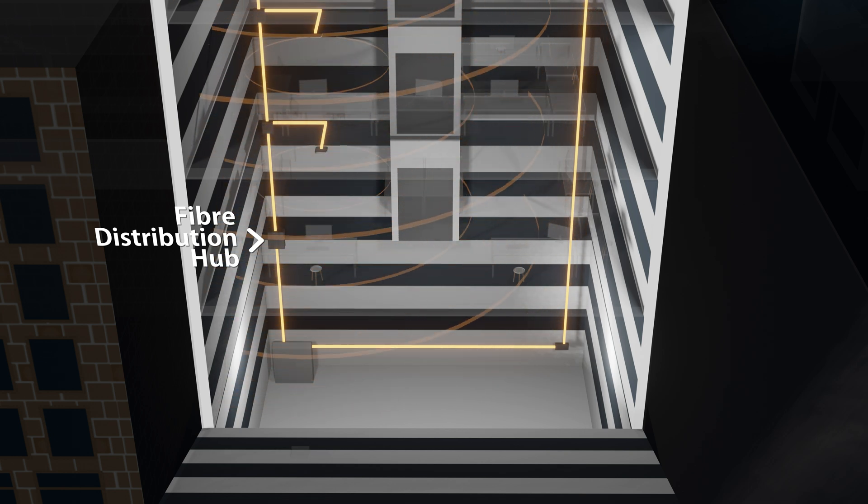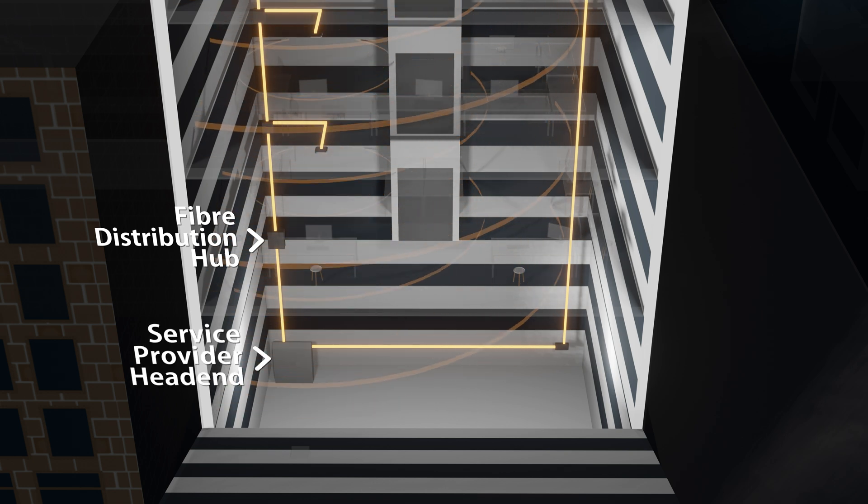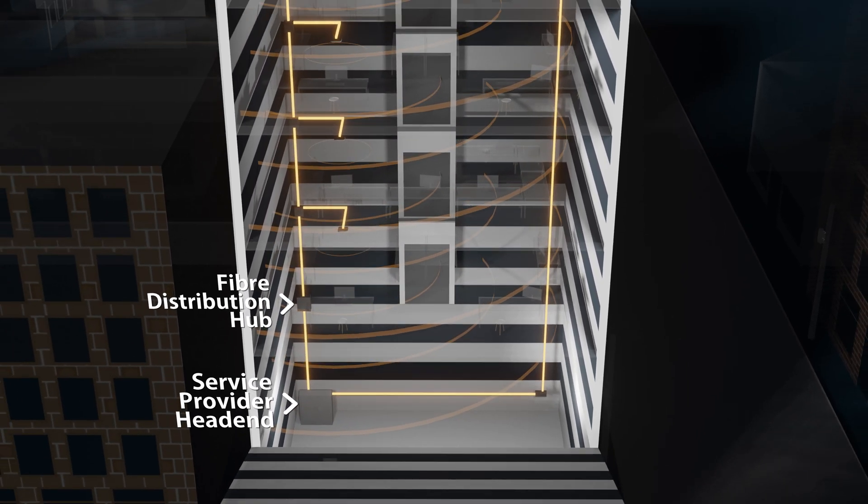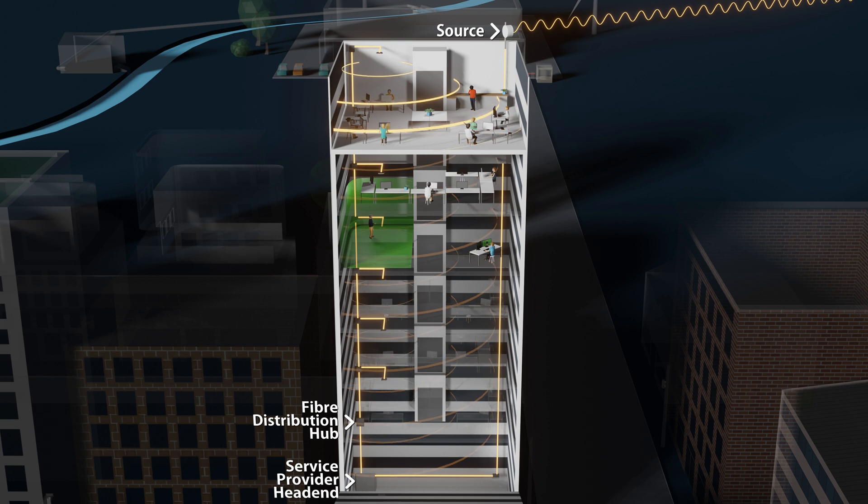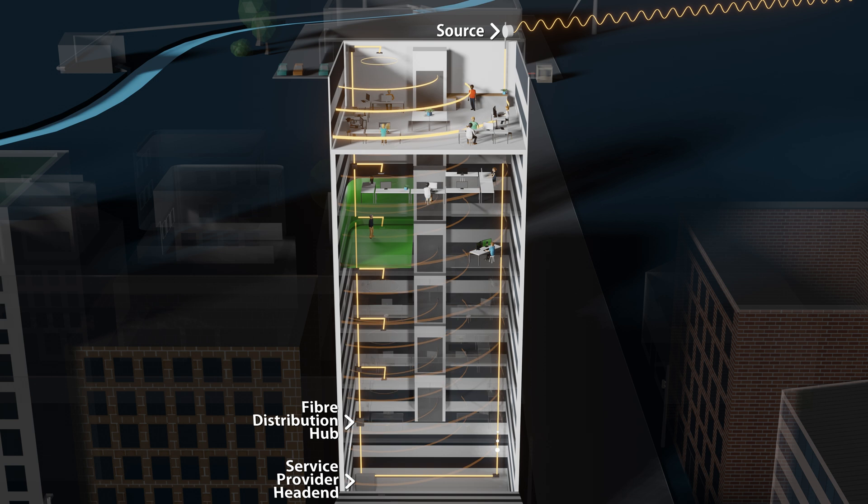An additional component that we might see here is a service provider headend. We will then also have our source. The antenna itself might be located on the roof of the building where coverage is particularly good and this may then be sent down a fiber optic link or a coaxial link to an amplifier which is used to extend and amplify the signal to provide adequate coverage across the whole building.